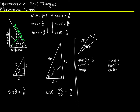Cosine is adjacent over hypotenuse, so I'll get square root of 3 over 2. Tangent is opposite over adjacent — opposite is 1, adjacent is square root of 3. Cotangent is adjacent over opposite, so I get square root of 3 over 1. Secant is hypotenuse over adjacent, so 2 over square root of 3. And cosecant is hypotenuse over opposite, so 2 over 1.